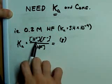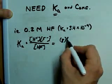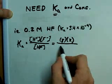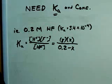it gives us X F-, and we're left with 0.2 minus X of HF.